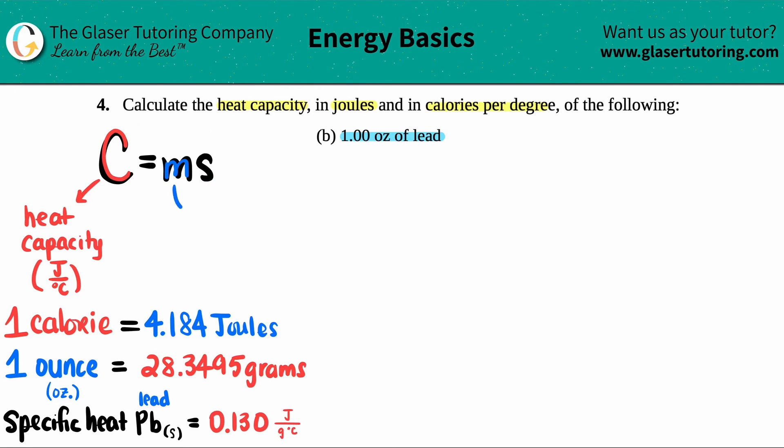m stands for mass, and the standard unit of mass is in grams if I'm using this formula. Then s stands for the specific heat of that certain compound or element. In this case we're talking about lead, so I have to use the specific heat value of lead. Specific heat is always in joules per gram times degree Celsius.